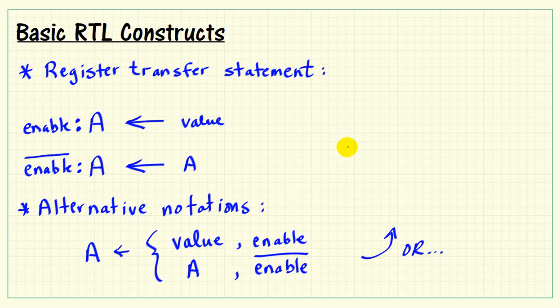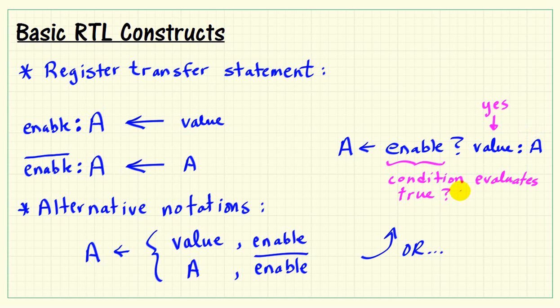Or another notation that's borrowing from the so-called ternary assignment operator from both the C language and the Verilog language. Looks like this. We test a condition. The question mark then finishes the statement of the condition. So we say, does this condition evaluate to true? That is, is enable in fact true? If yes, the value that gets passed to A is listed next. Otherwise, and that's the colon. Otherwise, the value that gets passed over is whatever is in A right now. So we think of this as, that's the value we use if the condition is true. This is the value that we use if the condition is false.